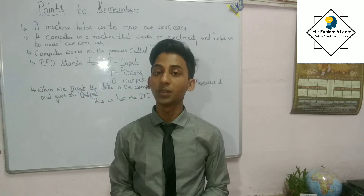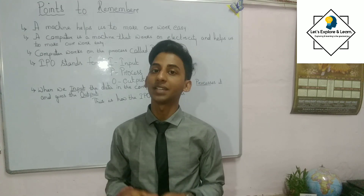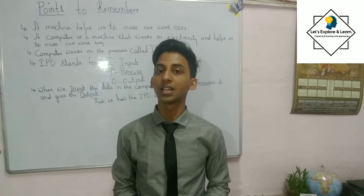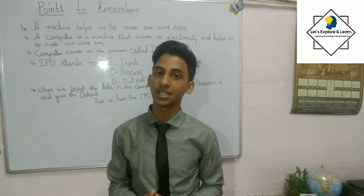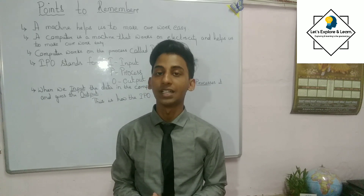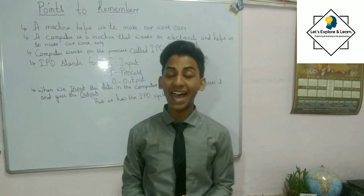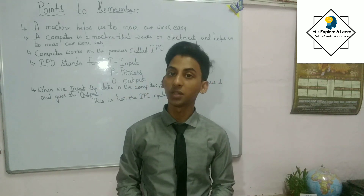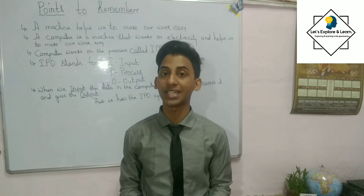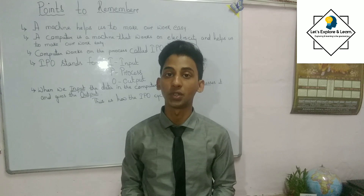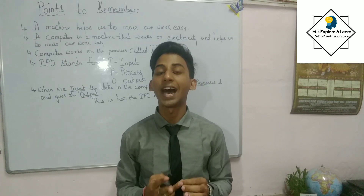Now we need to understand how these lengthy calculations can be done. This process is called the IPO cycle — that is, Input, Process, and Output cycle. I stands for Input, P stands for Process, and O stands for Output. These three things are where the computer works — the IPO cycle.